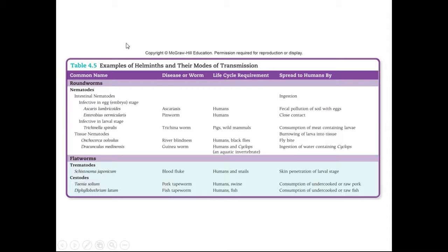Here are several species of helminths that are of clinical significance. We can have Trichinella spiralis, present in pigs — this is the reason you need to cook pork very well. We can have Dracunculus medinensis, or Onchocerca volvulus, which is a parasitic helminth that causes river blindness. We can have Enterobius vermicularis, also known as pinworm, in human beings. We also have Schistosoma japonicum, which causes blood diseases in human beings, and tapeworms that are also present in pork or fish.